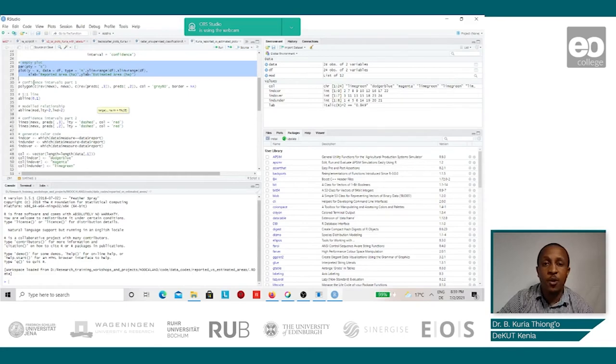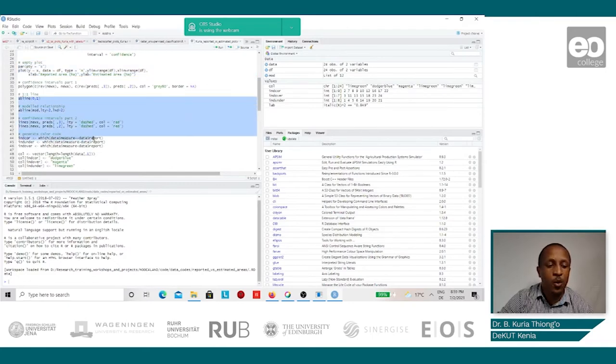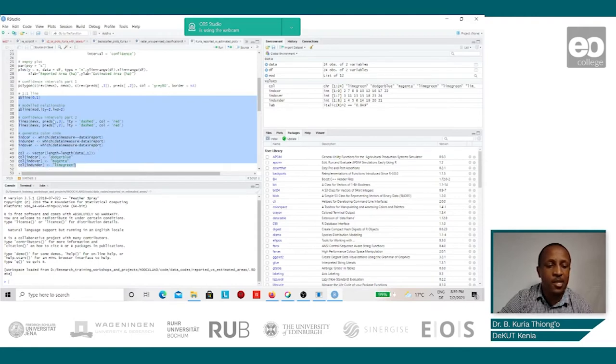Since we shall be using confidence intervals to see to what accuracy the areas were measured, we shall then have to draw some lines. These are the properties of the lines that shall be drawn, defined in terms of the color, the size, and so on.